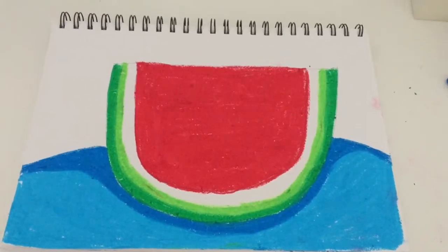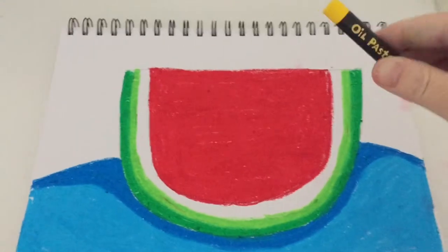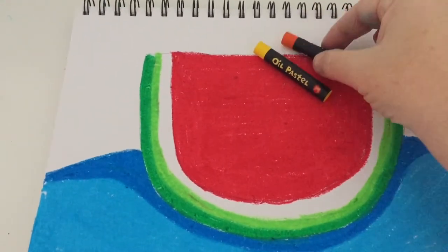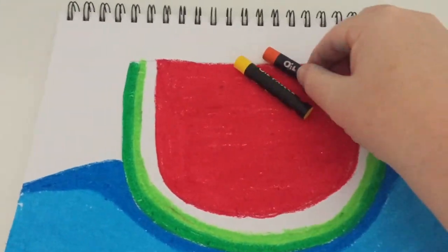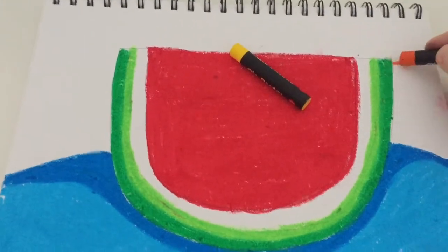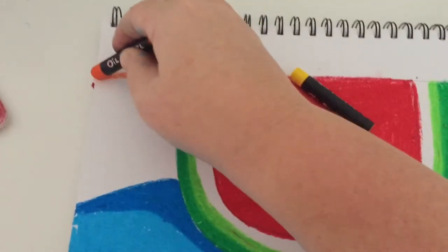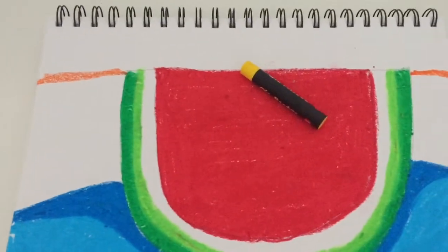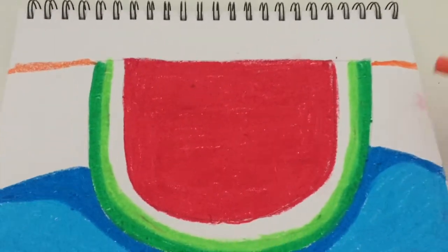My next step is to grab the yellow and the orange. These are warm colours again and I'm going to colour in the outside part of my watermelon slice. First, draw a line across the top where they meet, colour that in orange.